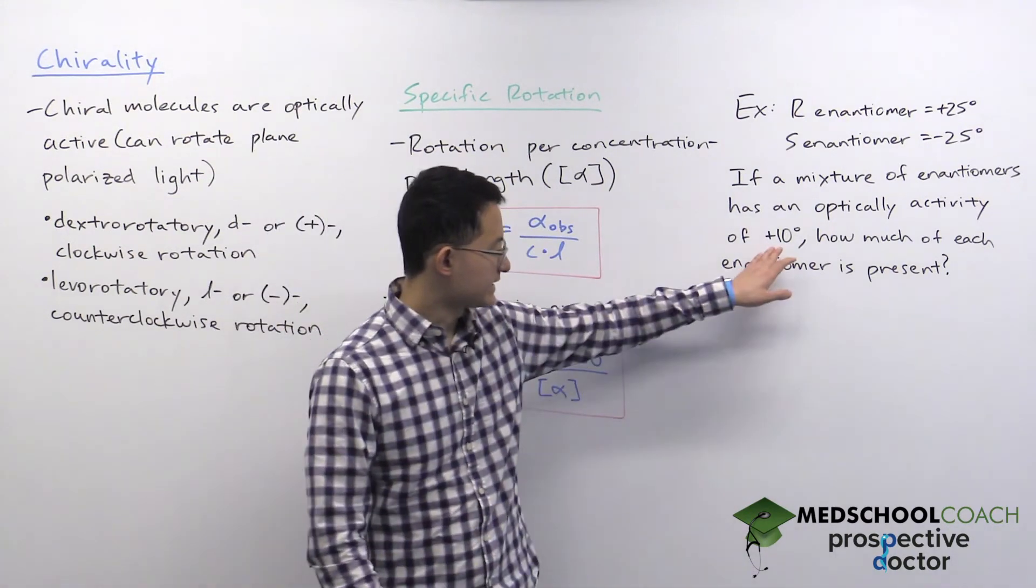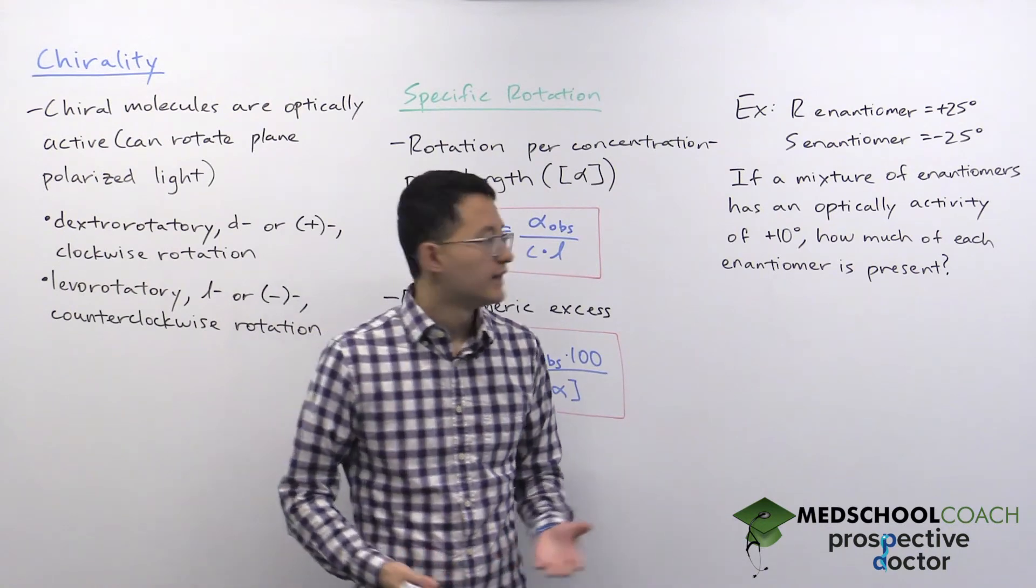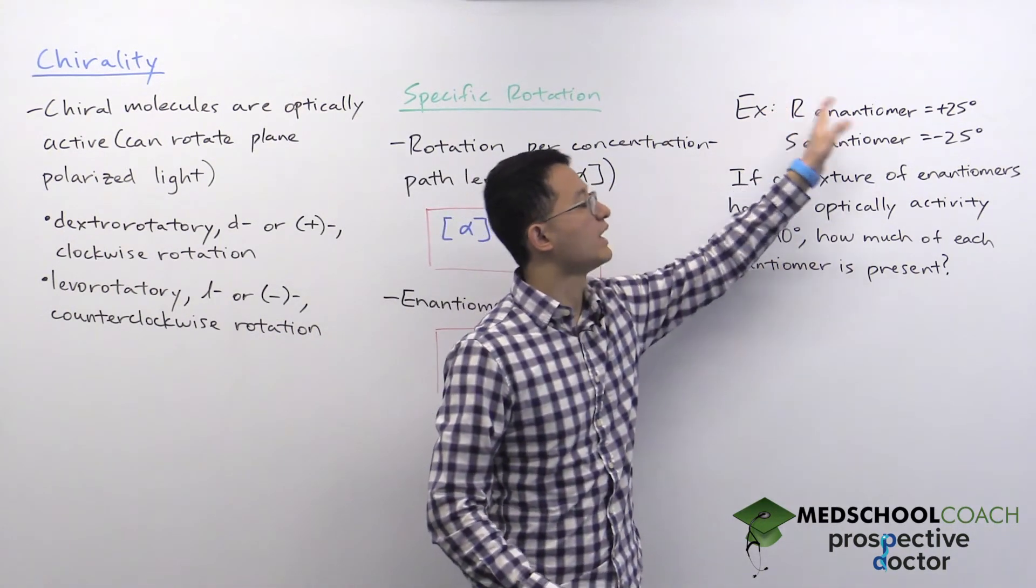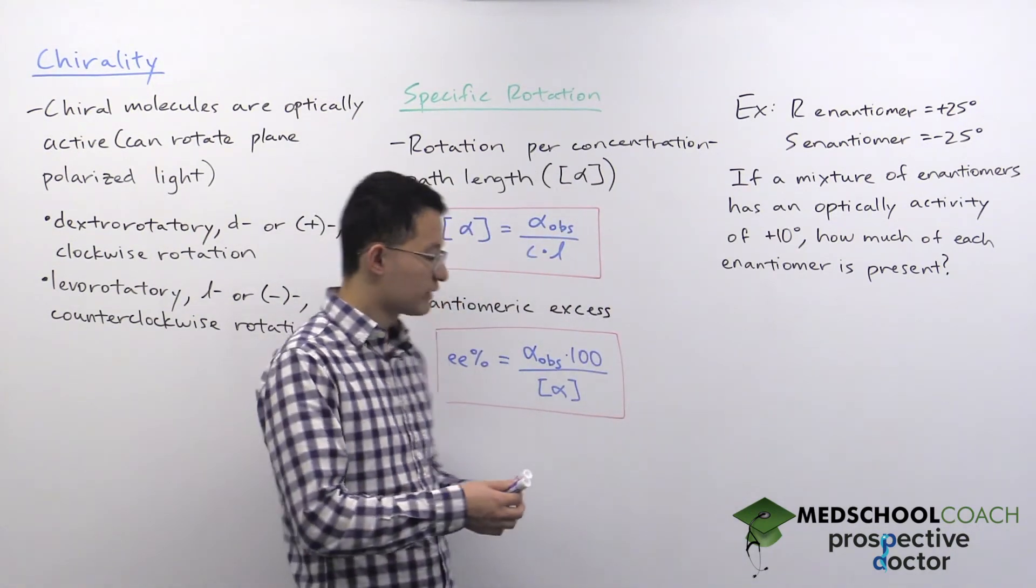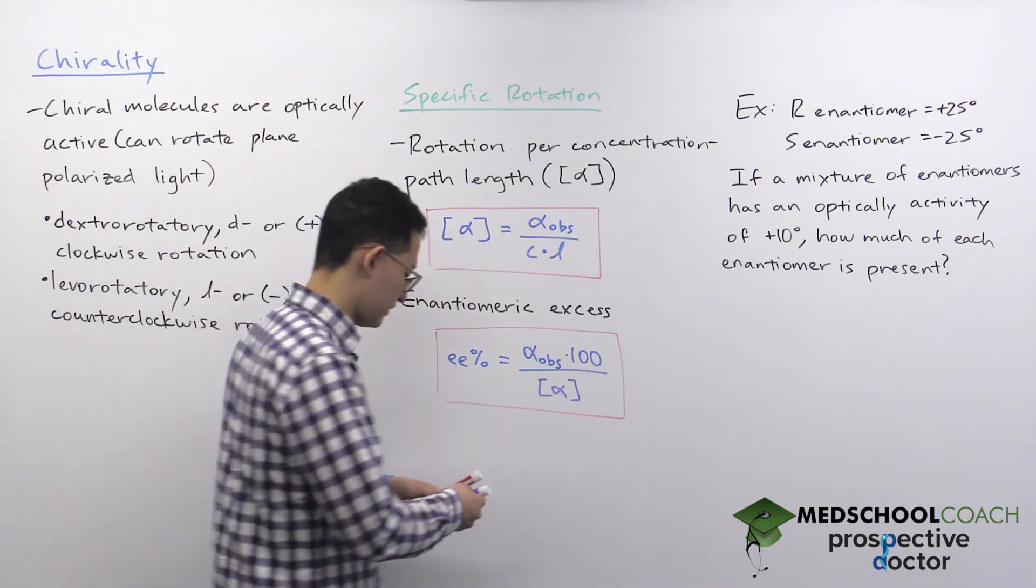In this case, since our optical activity is positive, that would imply that we have an excess of the dextrorotatory R enantiomer in this situation. So we can calculate what is the enantiomeric excess of the R enantiomer.